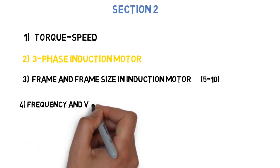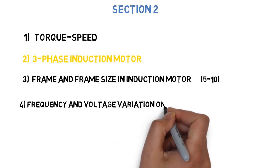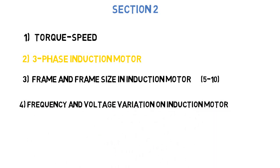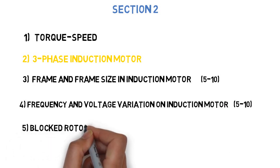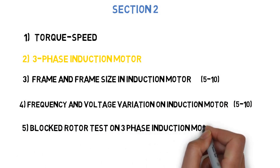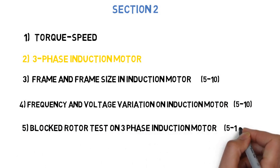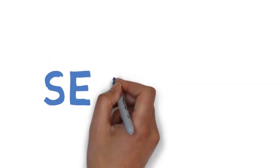Next question is explain the effect of frequency and voltage variation on induction motor performance. This can come for 5-10 marks. Next question is write the objective of performing no load or blocked rotor test on three phase induction motor. This can come for 5-10 marks. So these are the five questions you need to do in section two.